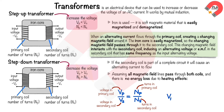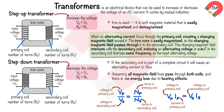The output power equals the input power of the supply, where Vp × Ip = Vs × Is, where Vp is the voltage in the primary coil, Ip is the current in the primary coil, Vs is the voltage in the secondary coil, and Is is the current in the secondary coil.